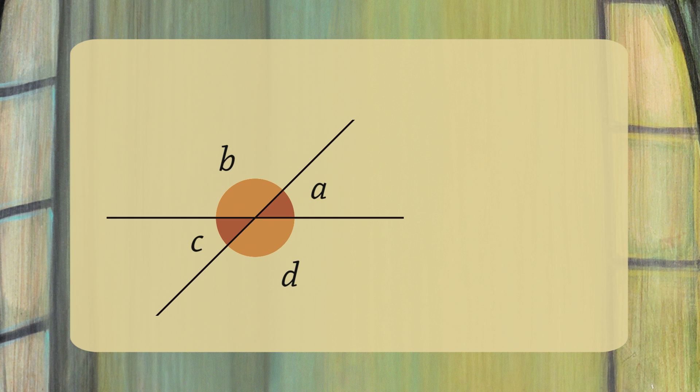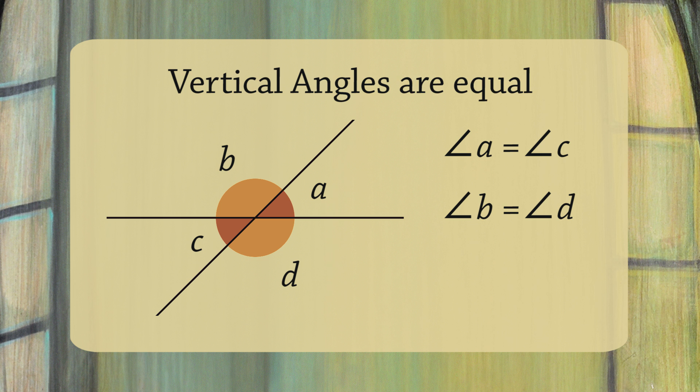The angles opposite one another are the same. So A and C are the same size, and B and D are equal. We call angles across from one another vertical angles. You'd say this fact more simply, as vertical angles are equal.